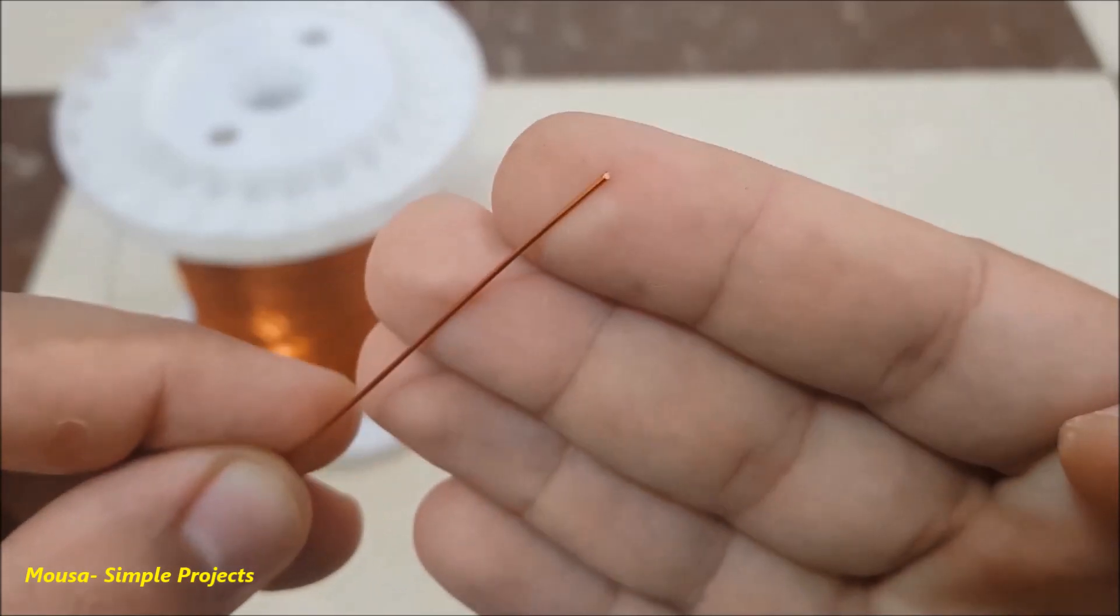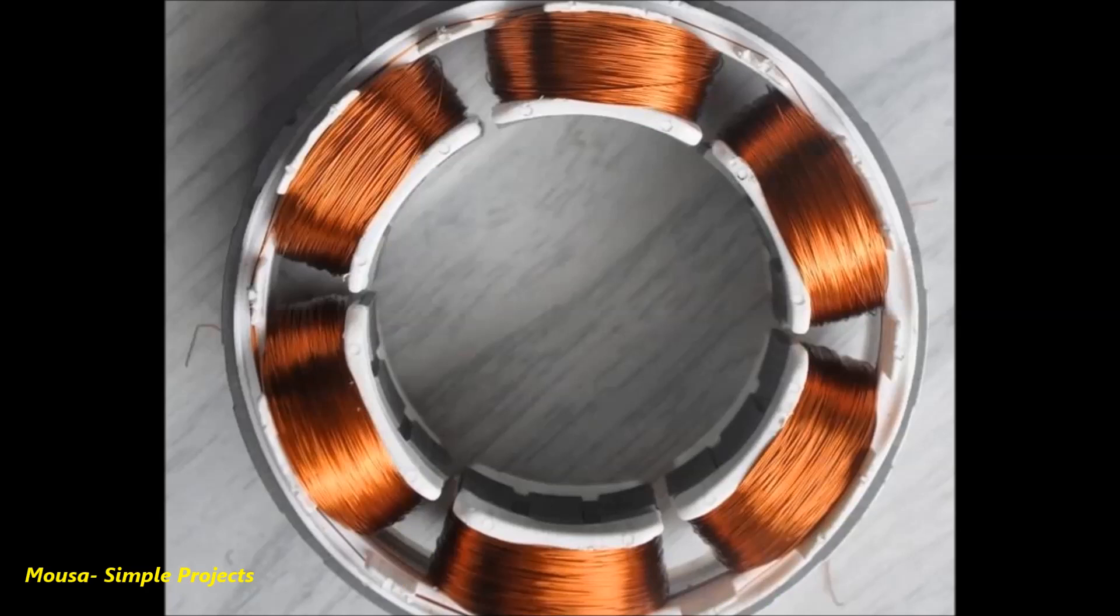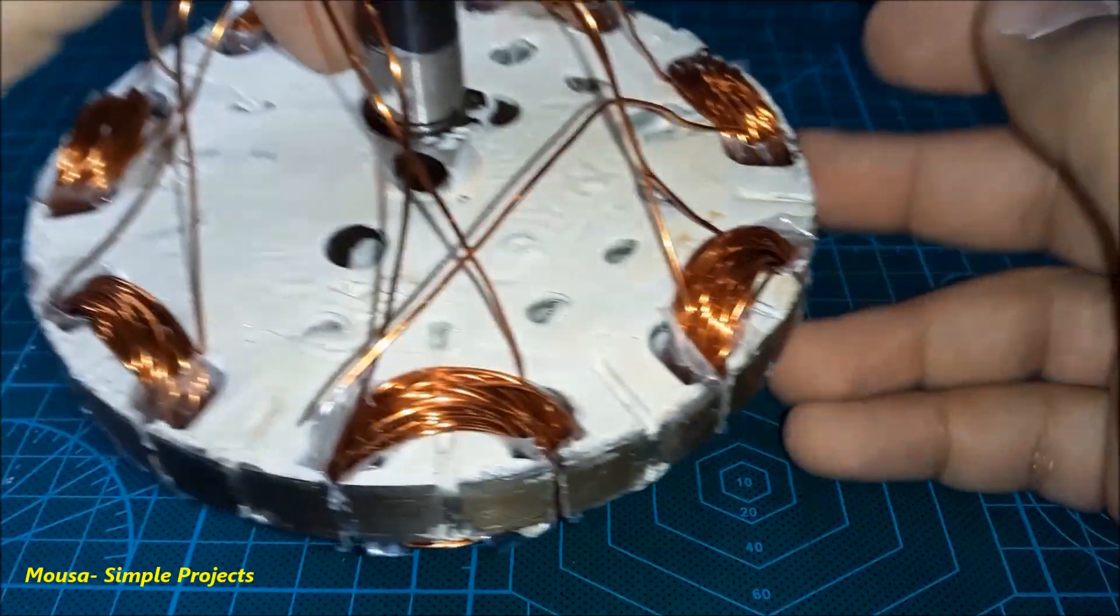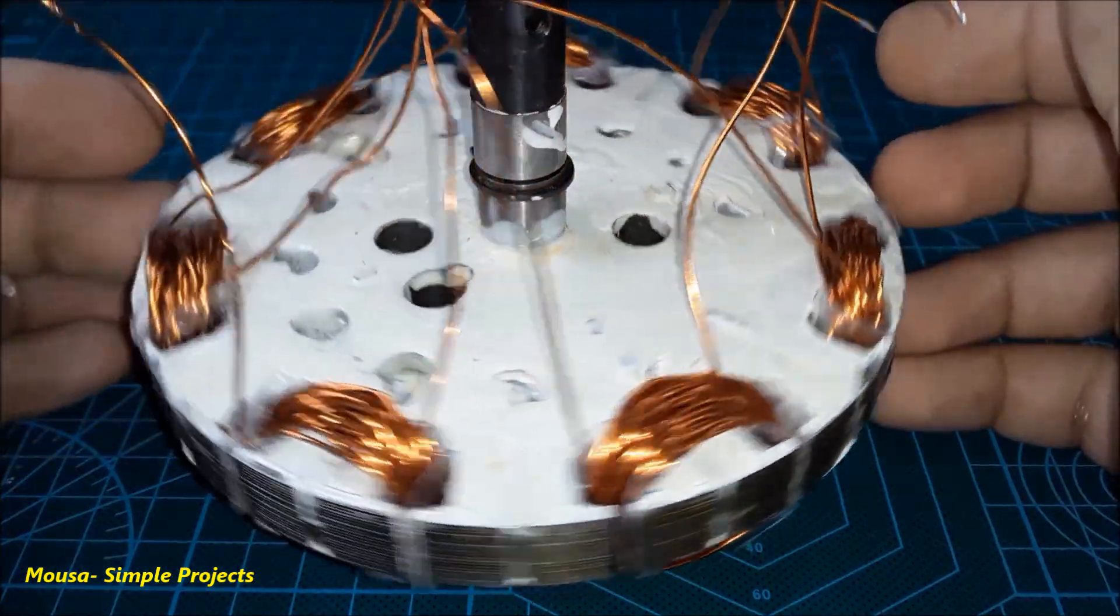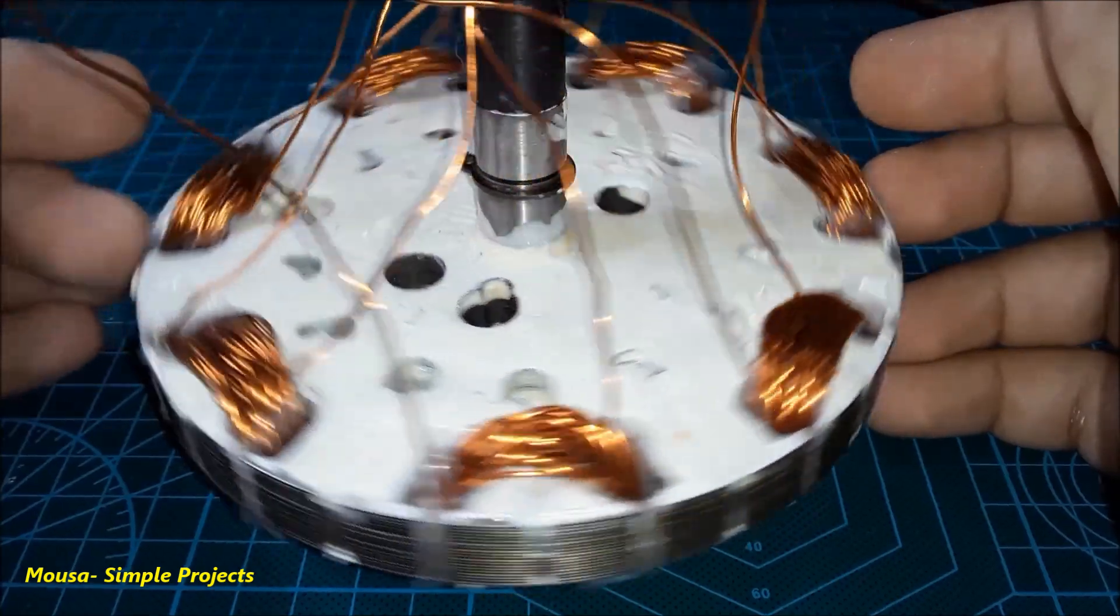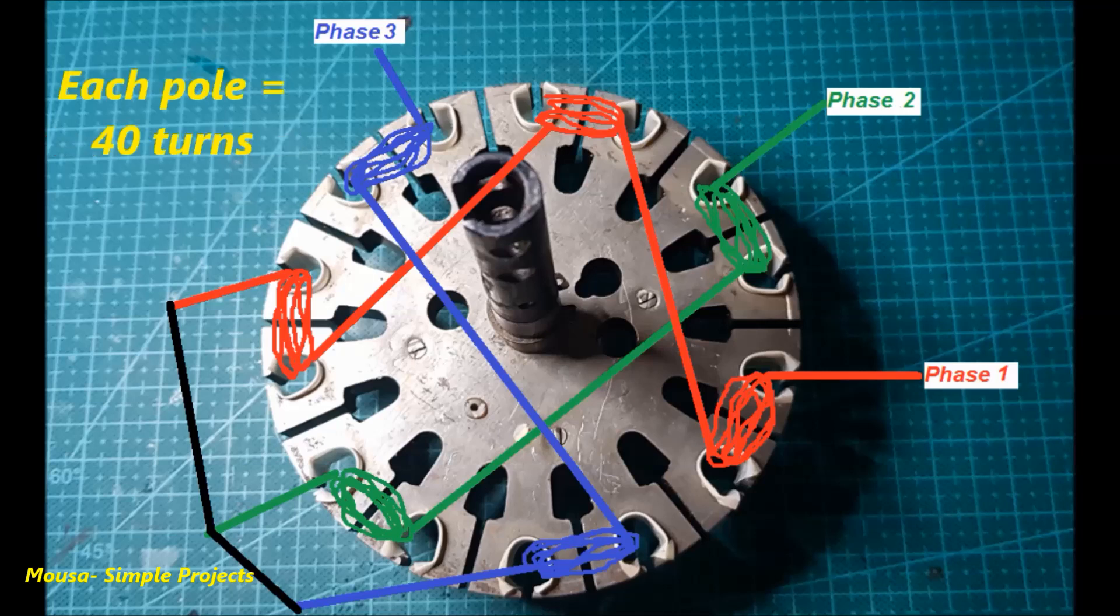As you can see here, I used 0.8 millimeter enameled wire. Commercial brushless DC motor poles numbers are multiples of three, such as six, nine, twelve, and twenty-four. But the problem here is this motor has 14 poles and I want to use seven poles only. To solve this problem, I'm forced to connect three poles in series as the first phase, and for the two other phases, connect two poles in series for each of them.